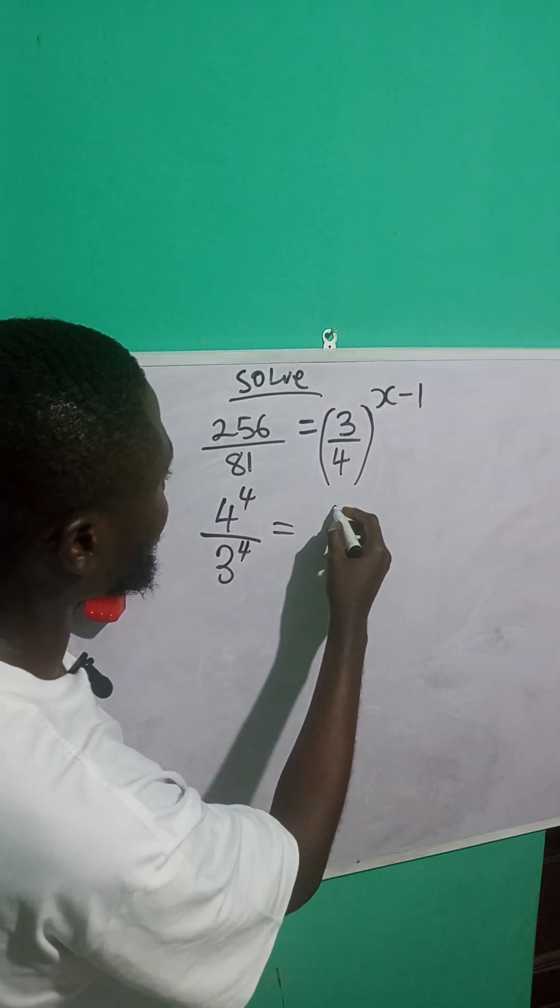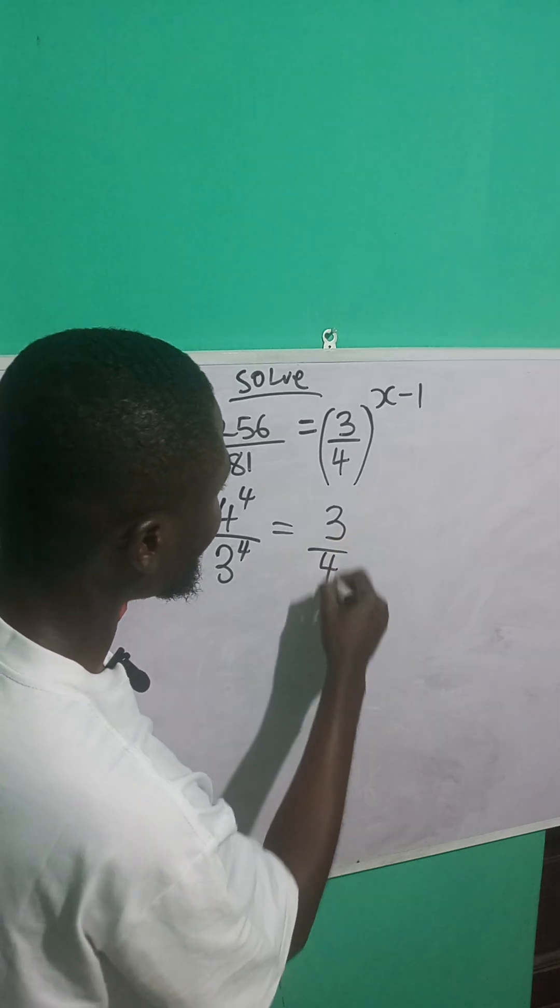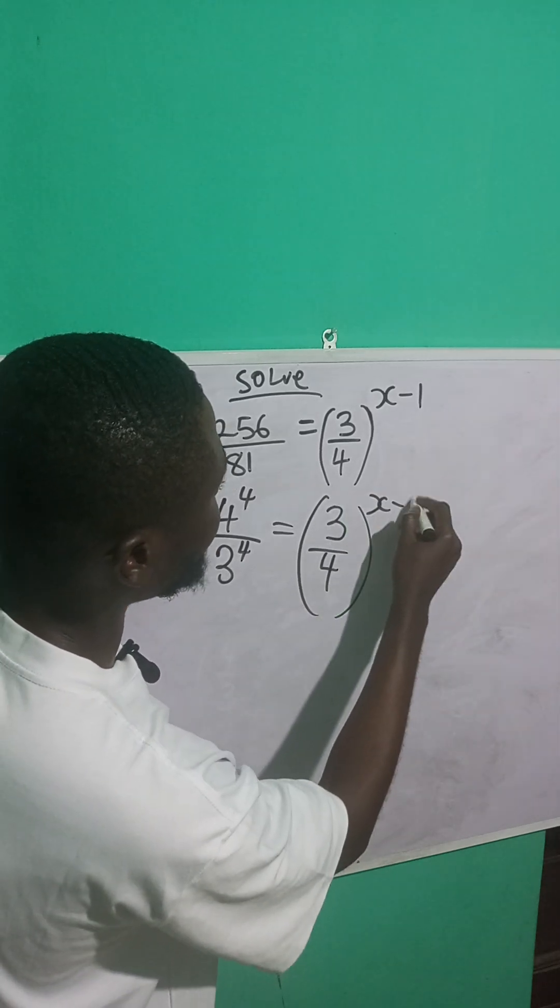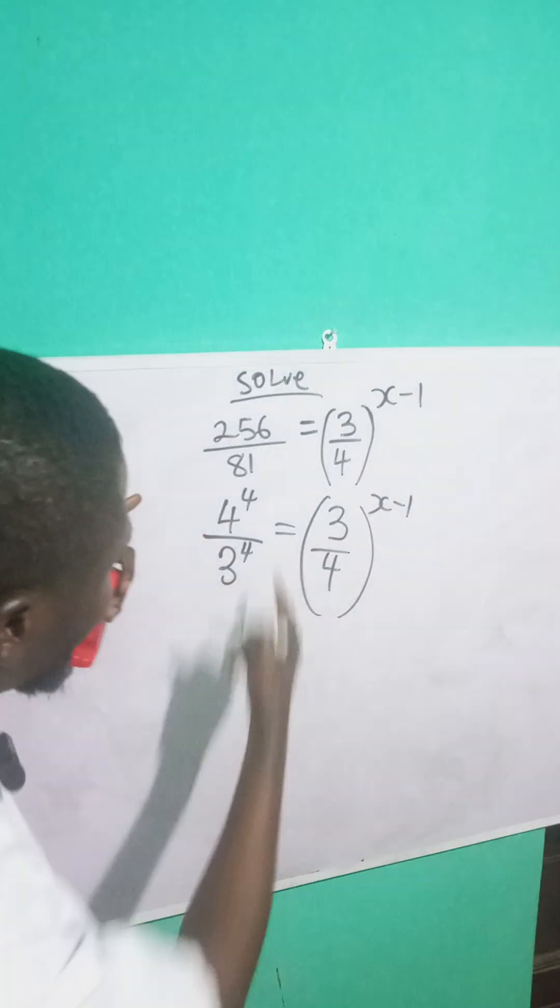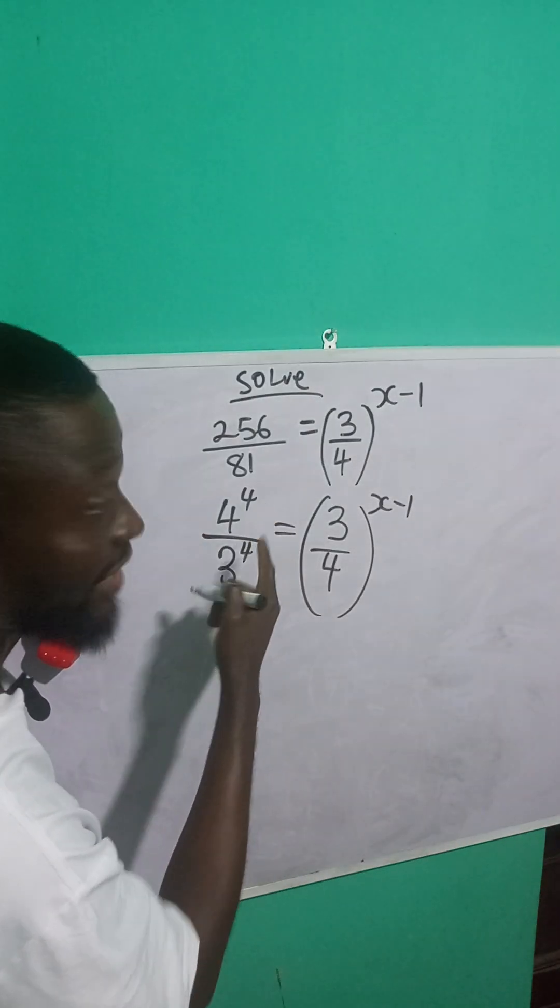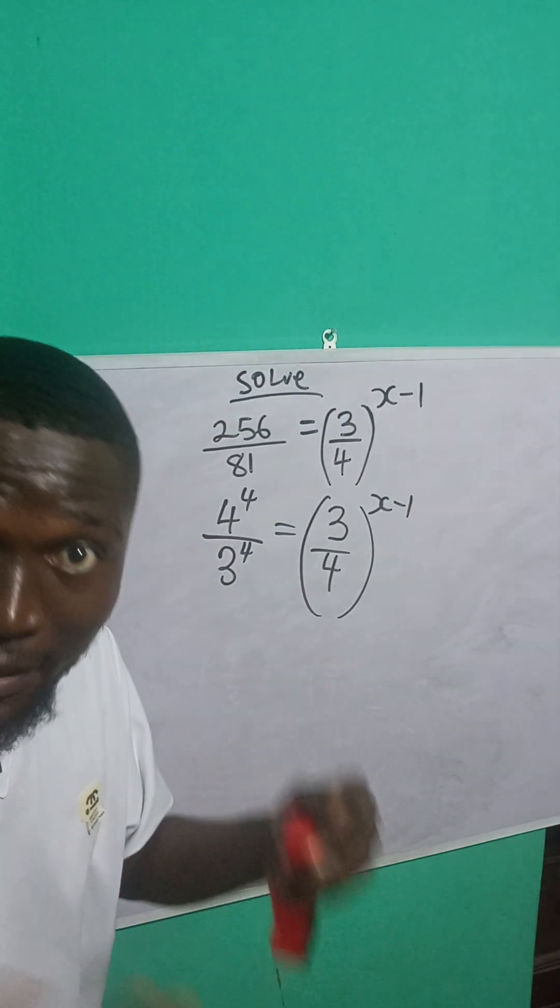I have 3 over 4 here, so 3 over 4. 4 raised to power 4, x minus 1. Now notice that I have the same power here, so it means that I can group them together and maintain the power.